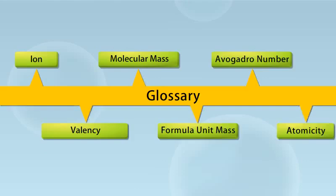Clusters of atoms that act as an ion are called polyatomic ions. The chemical formula of a molecular compound is determined by the valency of each element.